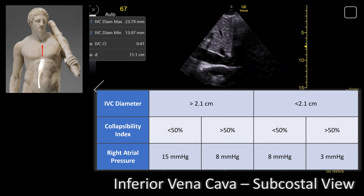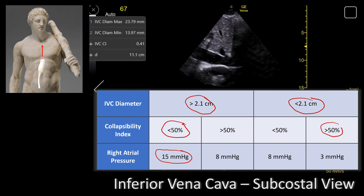So we got the numbers — let's figure out what they mean. We use this table to calculate right atrial pressure. If the inferior vena cava is more than 2.1 centimeters and less than 50 percent collapsible, that is a full IVC, so the right atrial pressure is anywhere between 10 and 20 mmHg — we take an average of 15 mmHg. On the other extreme, if the IVC is less than 2.1 centimeters and more than 50 percent collapsible, that is an empty IVC, so the right atrial pressure is 0 to 5 mmHg, and we take an average value of 3 mmHg.